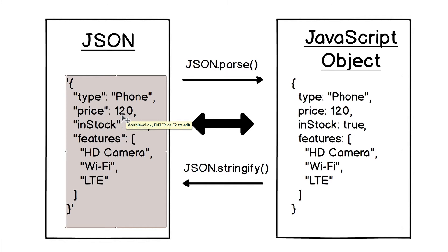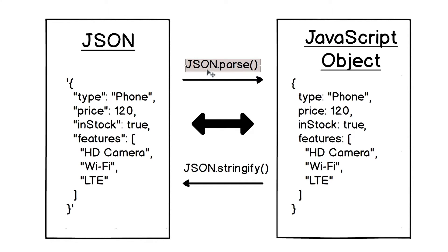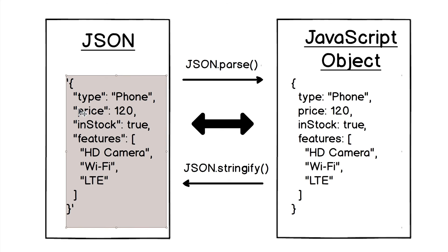You can easily convert JSON to a JavaScript object and back. In JavaScript there are two methods for this: JSON.parse will convert JSON to a JavaScript object, and JSON.stringify will convert a JavaScript object to JSON.